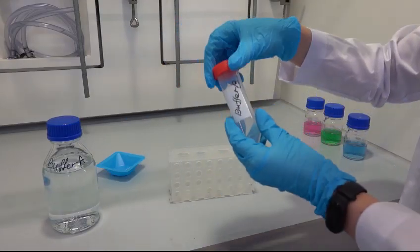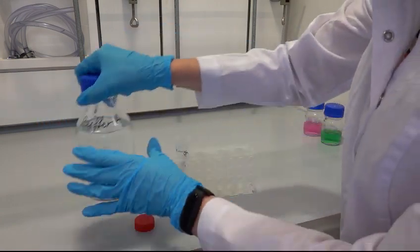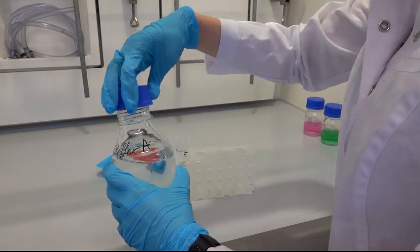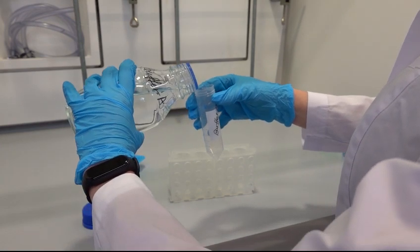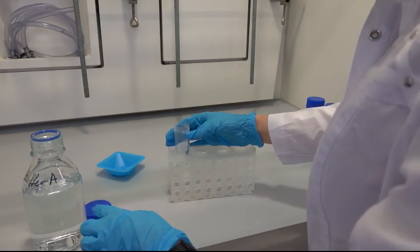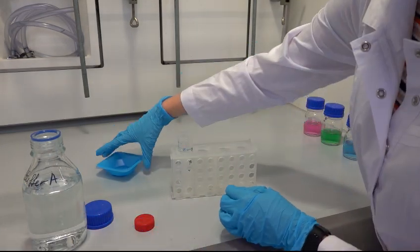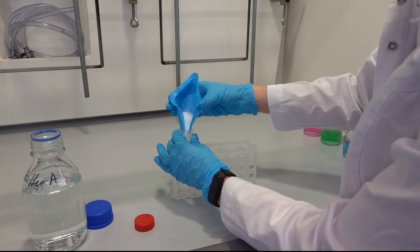Take the previously labeled falcon tube for buffer B and add between 20 to 25 ml of water. Add the rest of the water till the level reaches 50 ml.